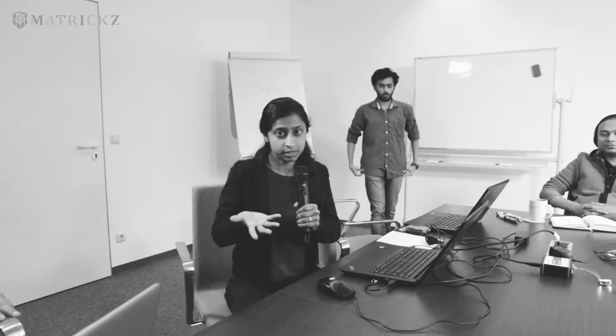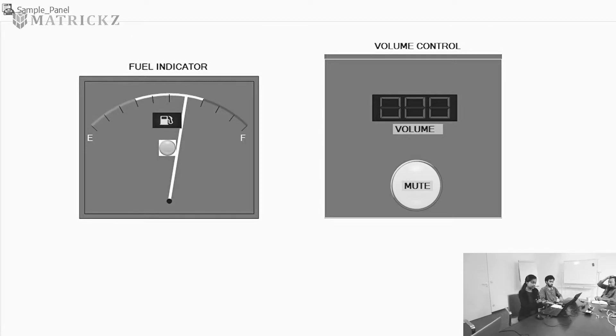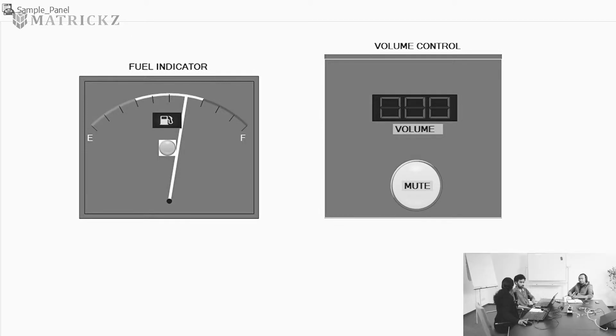We have the CAN bus up and running with a few CAN messages on the bus — messages like volume up, volume control, volume down. We also have a fuel indication message that shows the fuel level, and when the fuel level goes below a particular threshold, a fuel warning light turns on. For simulation purposes, we have a small panel designed in CANoe to display this.